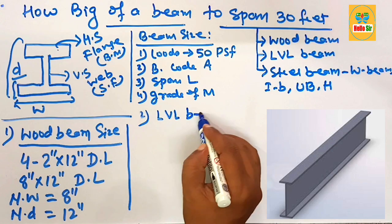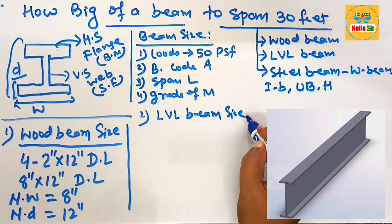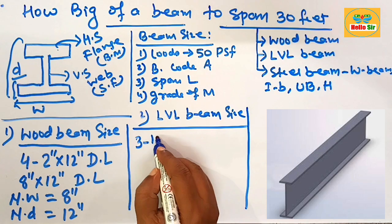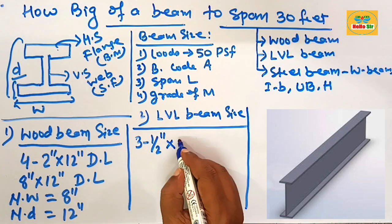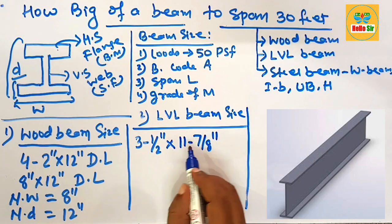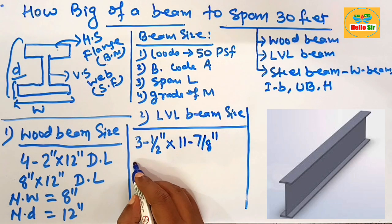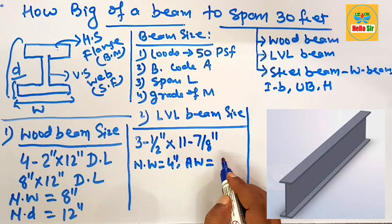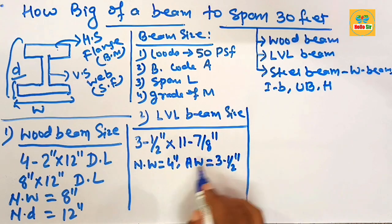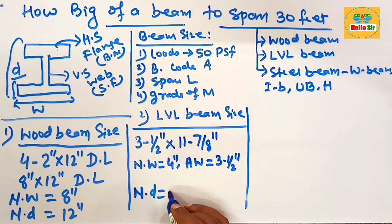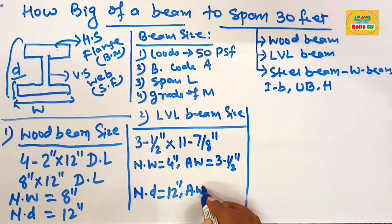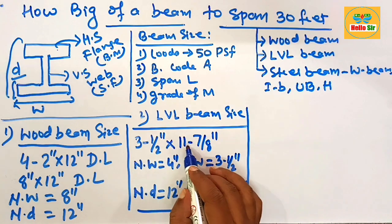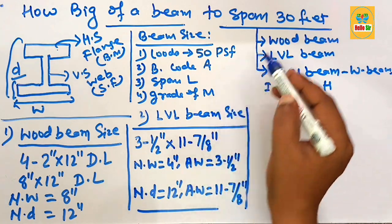For LVL beam size — laminated veneer lumber — required to span 30 feet, you can take a double-ply of thickness 3½ inches multiplied by 11 and 7/8 inches deep. This double-ply LVL beam has a nominal width of 4 inches, an actual width of 3½ inches, a nominal depth of 12 inches, and an actual depth of 11 and 7/8 inches. This is the double-ply 11-7/8-inch LVL beam size required to span 30 feet.